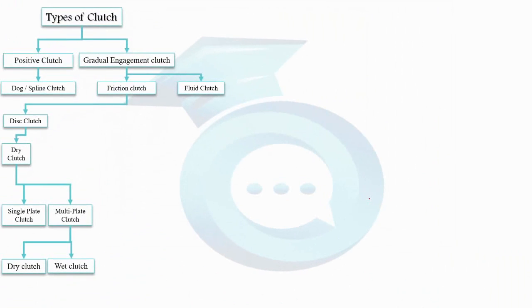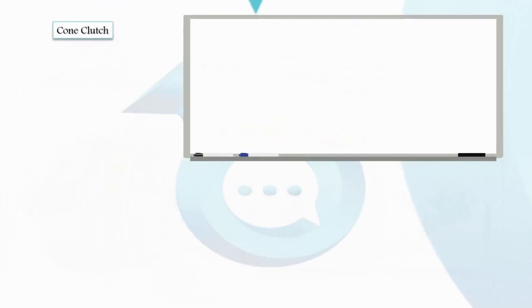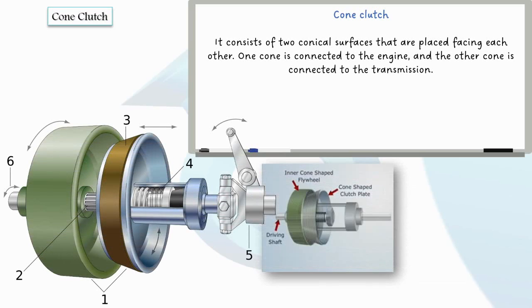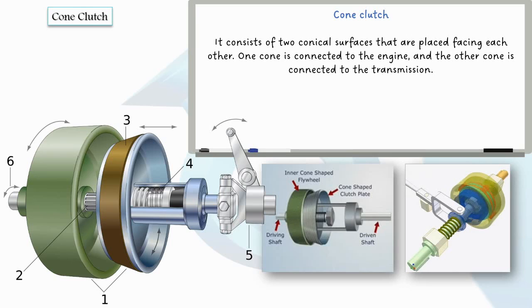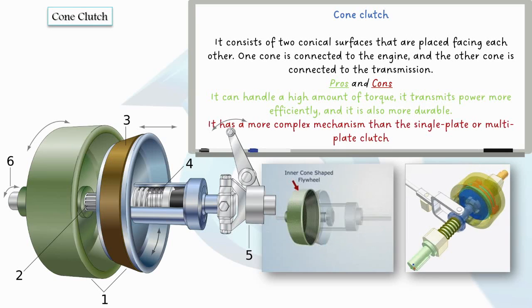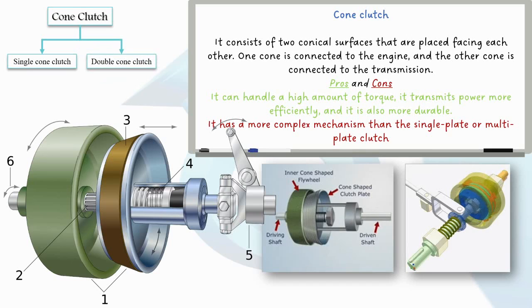Now, moving on, let's explore the cone clutch. This type features two conical surfaces facing each other, with one connected to the engine and the other to the transmission. The precision fit between the cones enables efficient power transmission, high torque handling and durability. The drawback of cone clutch is that it has a more complex mechanism than single and multi-plate clutches. There are single cone and double cone variations, with the latter offering increased surface area for torque transmission.